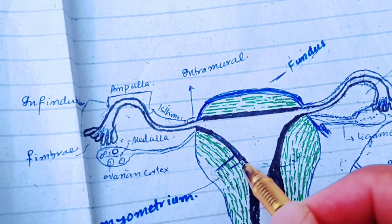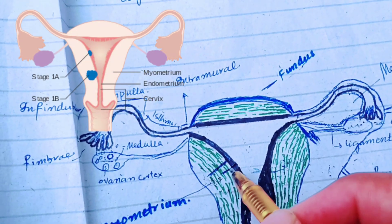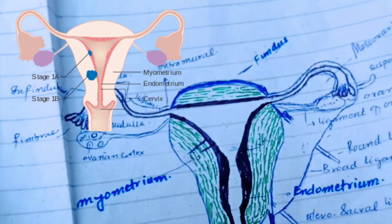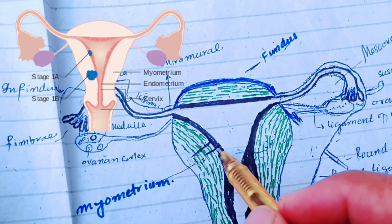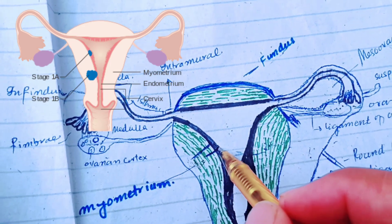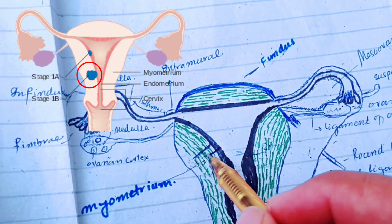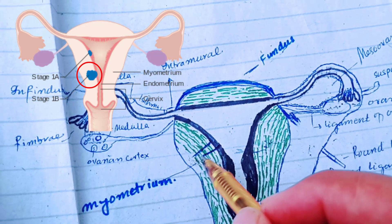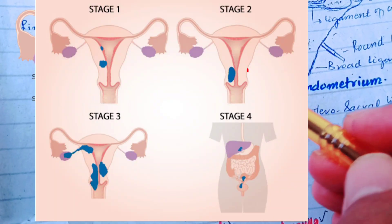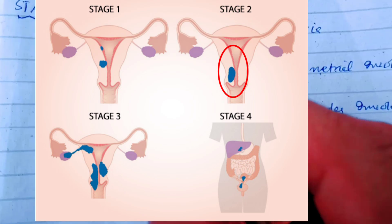In Stage 1a, less than half of the myometrium is invaded by the endometrial carcinoma. In Stage 1b, the carcinoma involves the endometrium and half or more of the myometrium is involved. When the cervical stroma is involved, it will be classified as Stage 2.